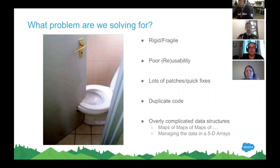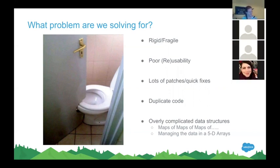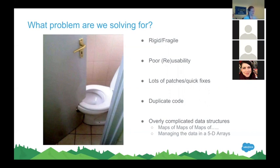Another thing we might find are overly complicated data structures — maps of maps of maps where we get really embedded into large data structures that are hard to use, hard to read, hard to maintain, and contain a bunch of different types of objects because you can't put them all into a single list, for example.